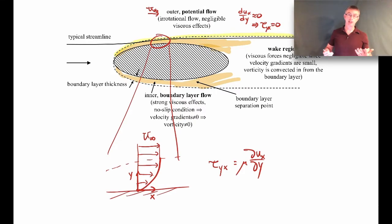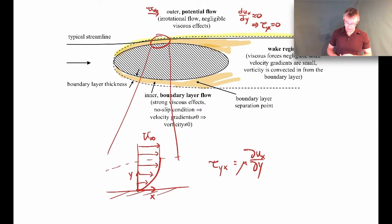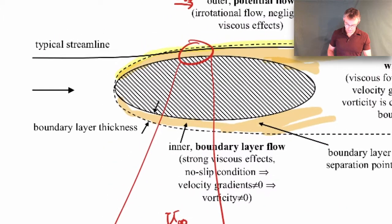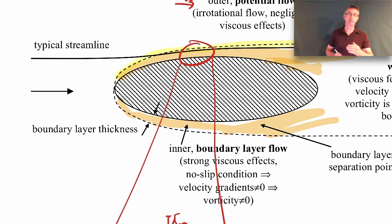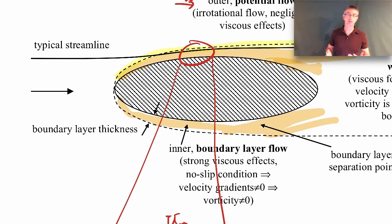The flow field around an object is actually quite complex — you have a boundary layer region, possible boundary layer separation, and a wake region. One thing to highlight: looking at a typical streamline, you can see it crosses the dashed line. The dashed line is not a streamline — it's just the boundary layer dividing line showing where viscous effects are significant versus where they're not. A streamline can move from the outer flow into the boundary layer region without any issue.